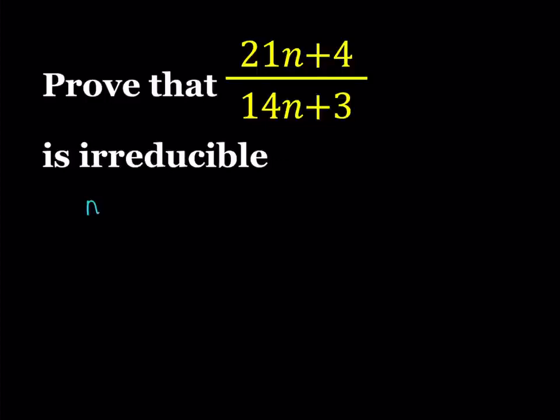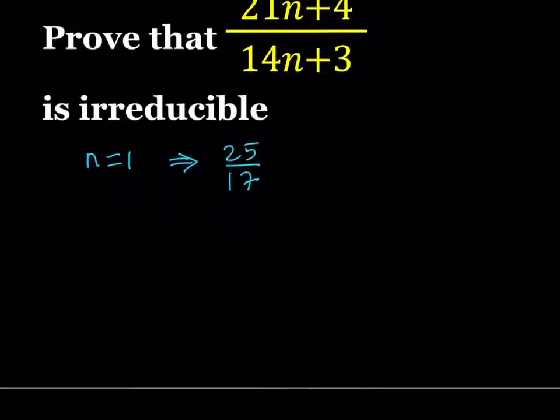So, for example, if n is equal to 1, what happens to our fraction? Let's go ahead and check it out. We're going to be getting something like 25 over 17. Irreducible basically means that 25 and 17 have no common factors besides 1. Let's test another value.